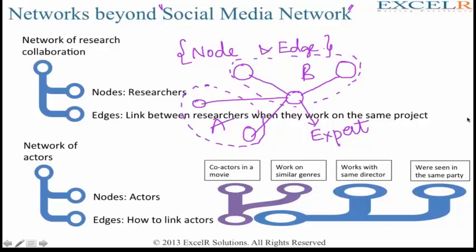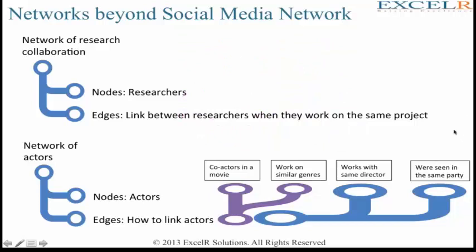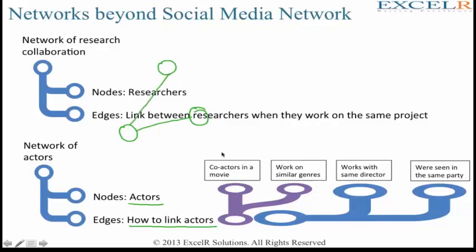You can come to know about these kinds of good insights. Your nodes can also be actors if you want to apply this to the acting profession. You have different actors, and the question becomes: how do you want to establish the link or the edge? How do you want to link the actors? You can link co-actors, and if there is a link between two, three, or multiple actors, what does that indicate?